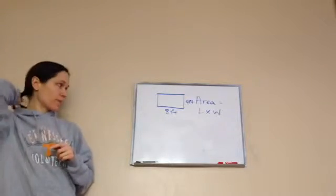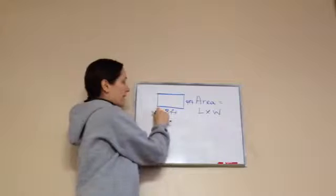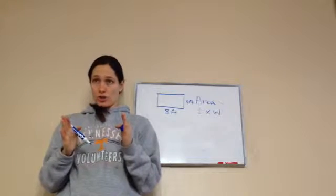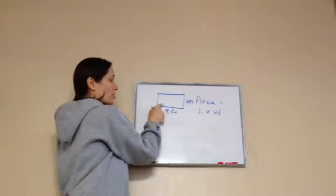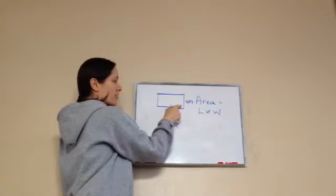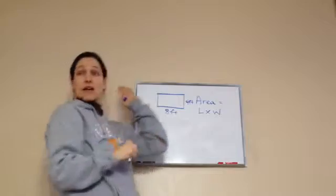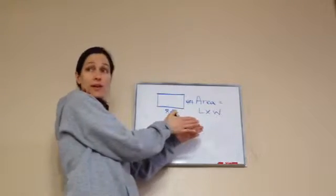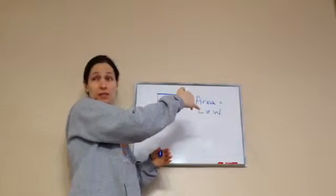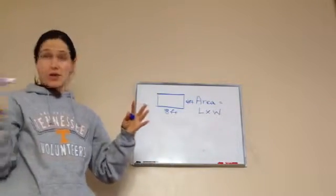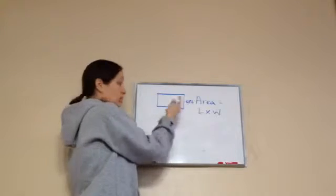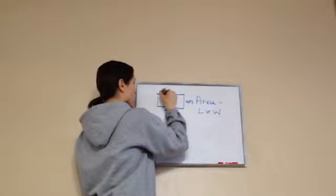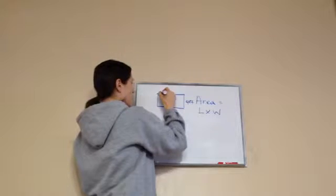Watch how I'm going to do this. That would be like having eight tiles going this way, because each tile is a foot long. So it'd be like: one foot, two foot, three foot, four foot, five foot, six foot, seven foot, eight foot — eight square tiles going this way. But I'm also going four tiles the other way, from the door to the other wall. So I'm going to draw eight of these going this way.